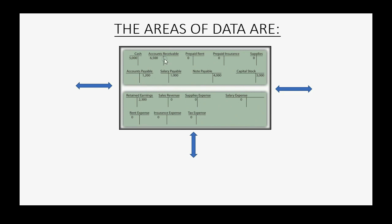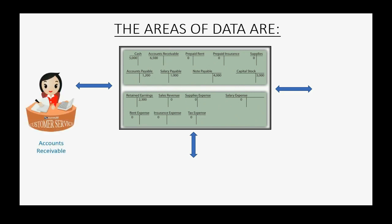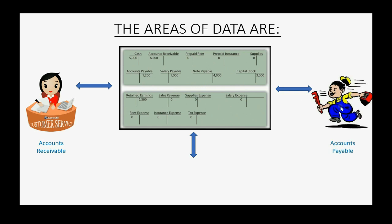For example, this T account — accounts receivable — the total balance must match the total of all the balances of all the customers in the separate area of accounts receivable customer records. It's the same for accounts payable: the balance in the general ledger must match the total of all the money you owe to each vendor from the separate accounts payable vendor records. And if you have a merchandise business, the inventory account balance must equal the totals of all the quantities of the inventory on hand at the moment you transferred from the old system to the new.